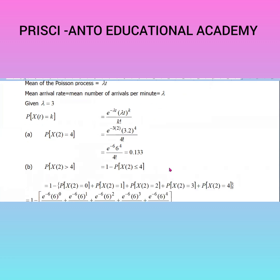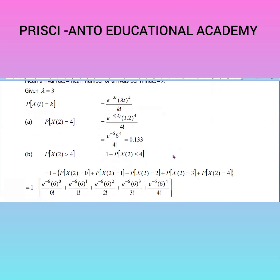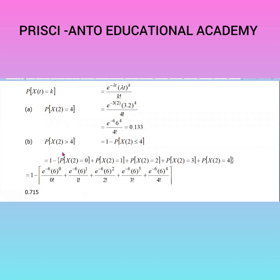The second subdivision is more than four customers arrive. So, the probability that X(2) is greater than 4. Using the formula: probability of X greater than a equals 1 minus probability of X less than or equal to a, we get probability of X(2) greater than 4 equals 1 minus probability of X(2) less than or equal to 4.